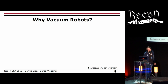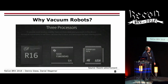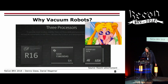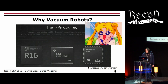Why we started with vacuum cleaners: in early 2017 I saw a Xiaomi advertisement claiming the vacuum cleaner has three processors — one of them a quad-core. It's the perfect thing to get very powerful hardware for cheap, so why not take a look? That was more or less how we started.